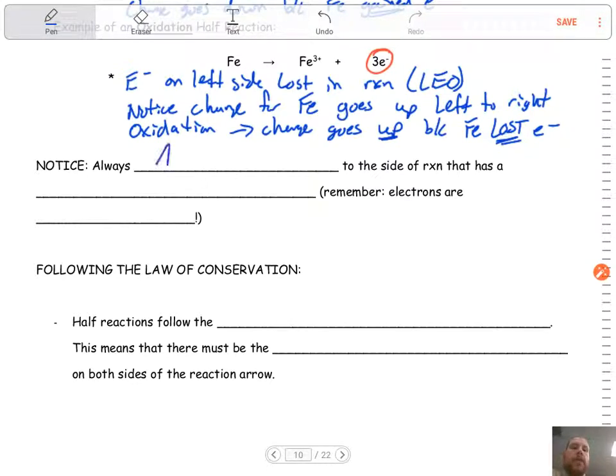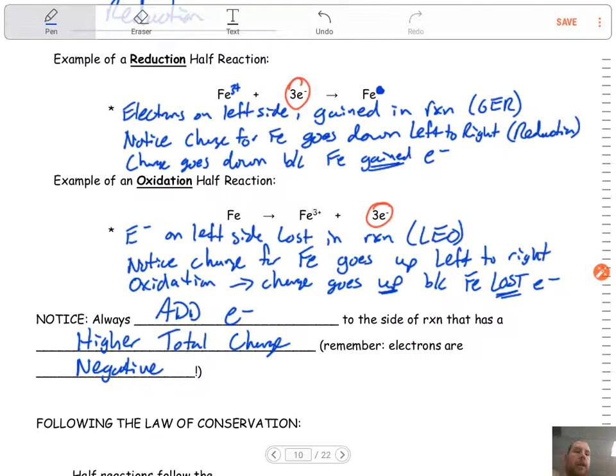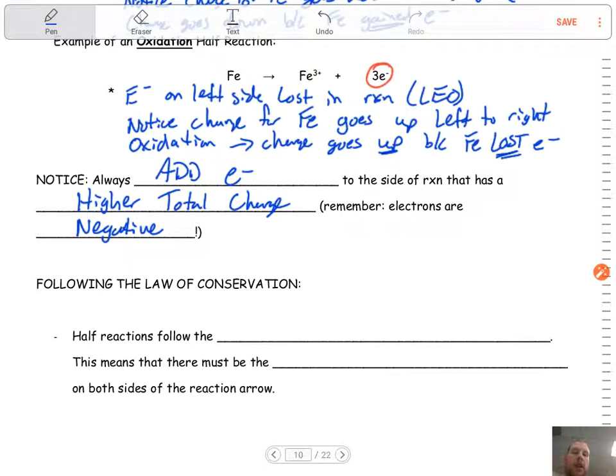Notice, we always add electrons to the side of the reaction that has a higher total charge. Remember, electrons are negative, so they're helping to balance it out. This is the law of conservation of mass and charge. The higher charge - in the oxidation half reaction, we have a +3, so the electrons are with the plus. Up here, the electrons are also with the plus after we made that correction.